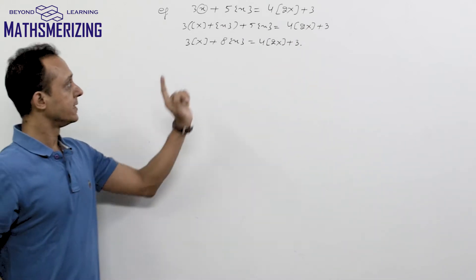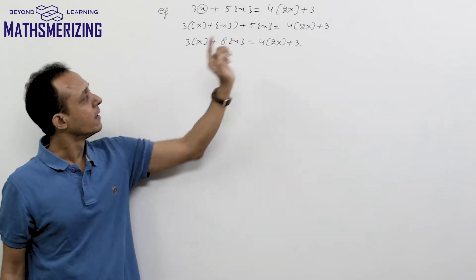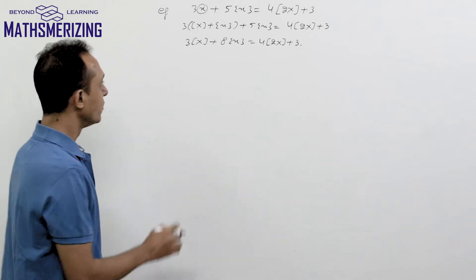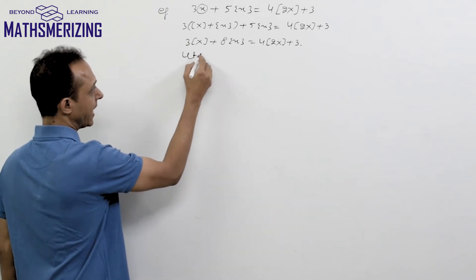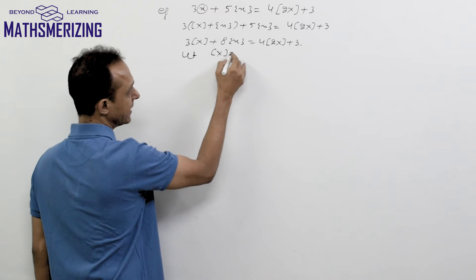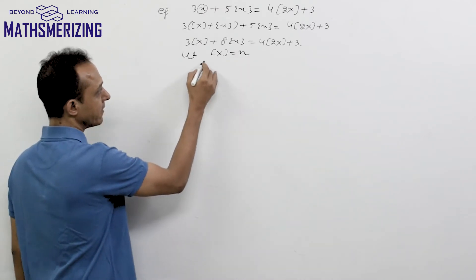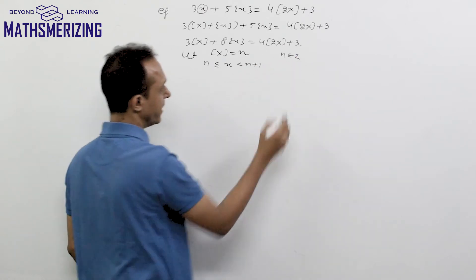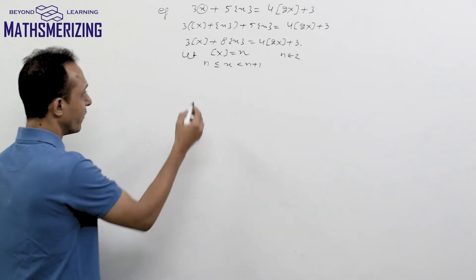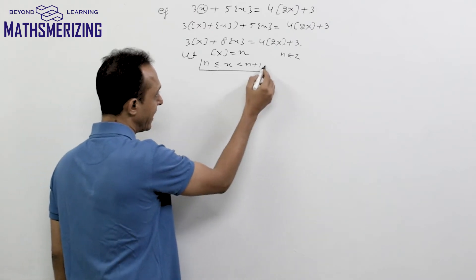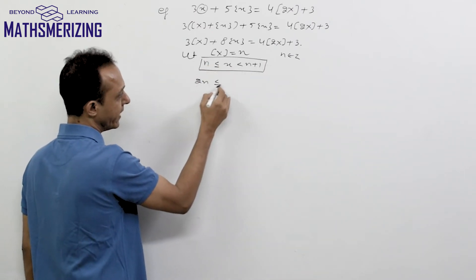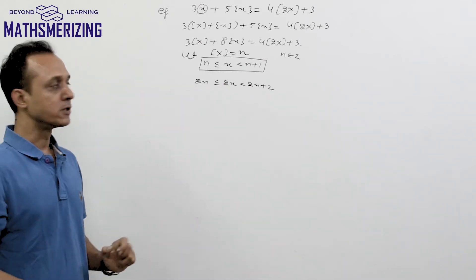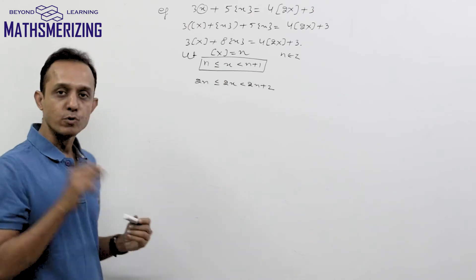This equals 4 times the greatest integer function of 2x plus 3. Now here we have a problem because we have both the greatest integer function of x and the greatest integer function of 2x. I cannot take 2 out from the floor function. So what I'll need to do is let the greatest integer function of x equal n, which means the value of x lies between n and n plus 1, where n is an integer. When x lies in that interval, multiplying by 2 gives 2x lying between 2n and 2n plus 2, so I have to take two separate cases.